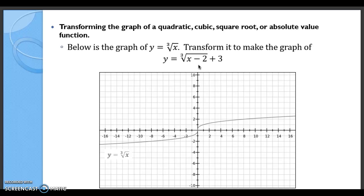This is very similar to transforming a graph with two steps. The minus 2 will do something and the plus 3 will do something. The plus 3 is going to move the whole function up 3, and then minus 2 is going to move the whole function to the right 2.